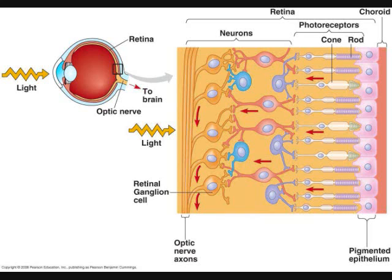The optic nerve axons are the axons of the retinal ganglion cells. All of the RGC axons meet at the optic disc, where they form the optic nerve. From the optic disc, the optic nerve axons run to the brain.